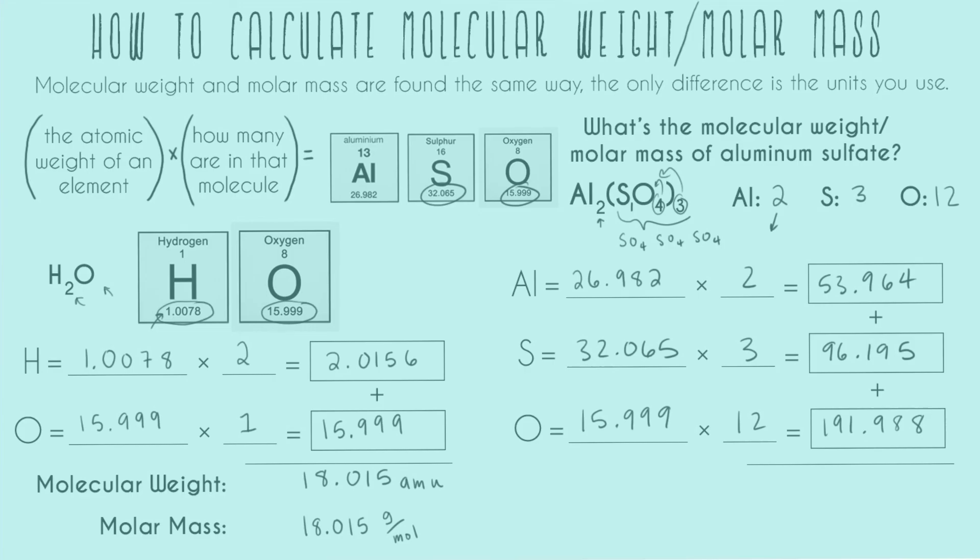So now just adding those all together, I chose to use five sig figs. I have 342.15. And now let's again do our breakdown of molecular weight slash molar mass. It's going to be the same number for both of them. If we're saying molecular weight, that's going to be atomic mass units, AMUs. And if we're saying molar mass, we're going to do grams over moles. So that's how you can calculate any molecular weight or any molar mass. It's all this same formula. Hope this was helpful and happy studying.